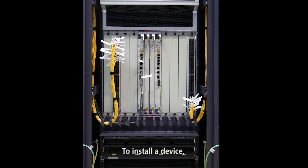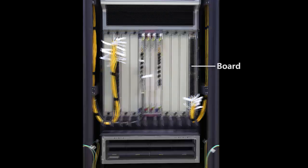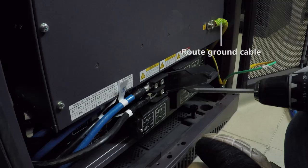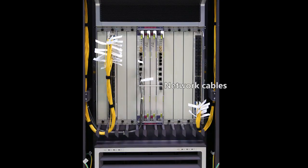To install a device, you need to place it into the corresponding cabinet, install boards, PM modules, and decoration panels for idle PM module slots, and route ground cables, DC power cables, network cables, and optical fibers.